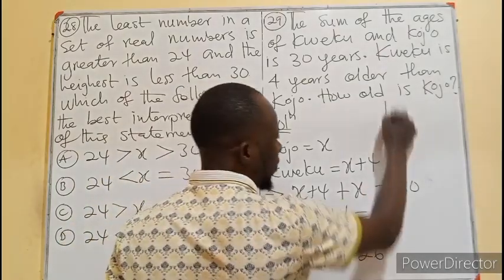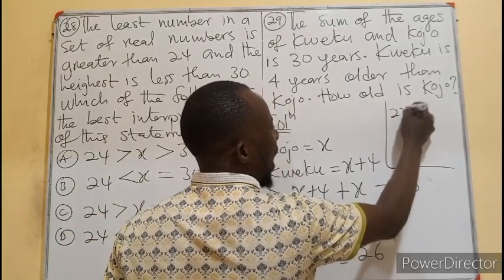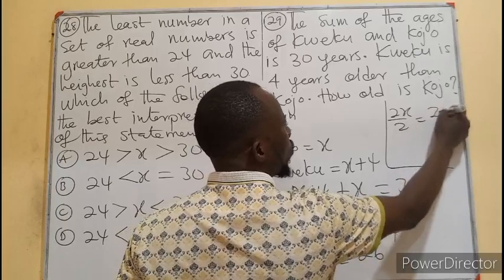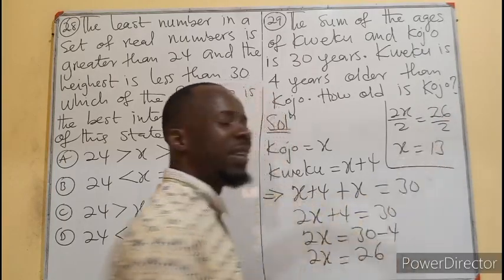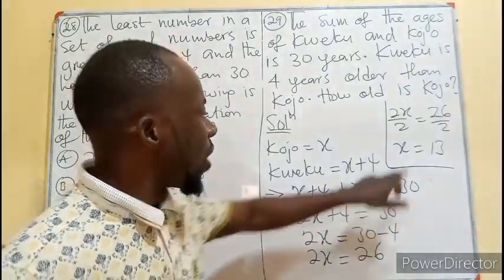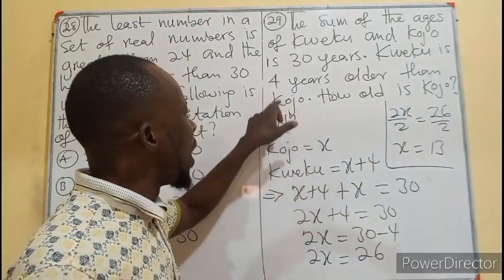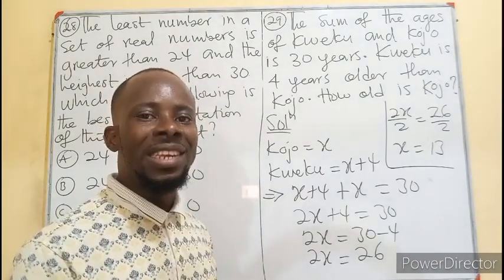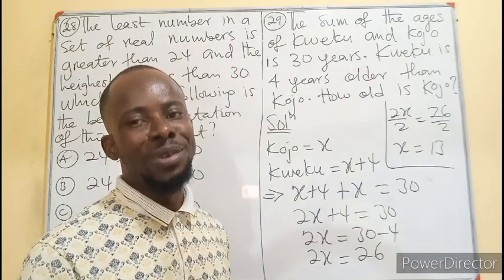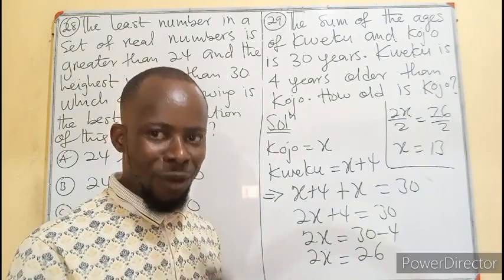We divide 2x by 2 and 26 by 2, meaning x will be 13. But the 13 is for x, and x is Kojo. Therefore, Kojo is 13 years old.